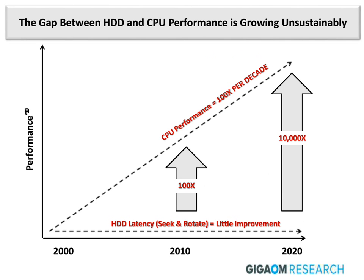With databases, the role of the hard disk traditionally has been to keep feeding the CPU with the data it's working on. CPU performance has been on a Moore's Law curve, increasing 100 times in performance per decade — looking back 20 years, that's 10,000 times. But since hard disks are mechanical, their performance in terms of reading and writing data has only grown incrementally. The capacity has grown, but the rate at which it can read and write has not grown anywhere near that level.